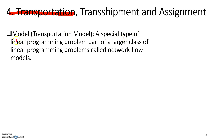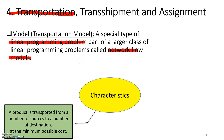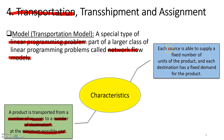A transportation model is a special type of linear programming problem, which is part of a larger class of linear programming problems called network flow models. The characteristics of a transportation model are that a product is transported from a number of sources to a number of destinations, and the objective is to minimize the cost of transportation. Each source is able to supply a fixed number of units of the product, and each destination has a fixed demand for the product.